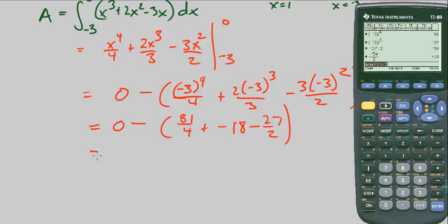So far, that's what we have. So 0 minus, I'm going to put this in my calculator. 81 over 4 minus 18 minus 27 over 2. So it's negative 45 over 4 here. Minus and negative cancel out, so it's just 45 over 4.